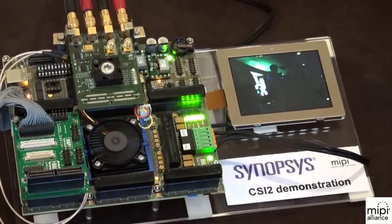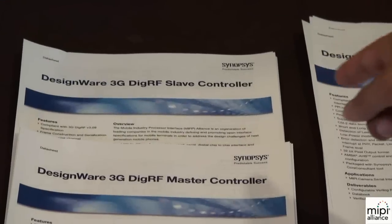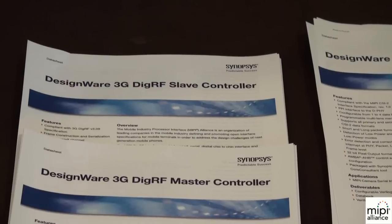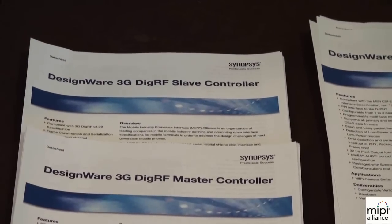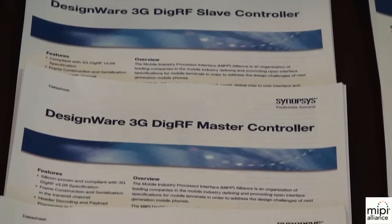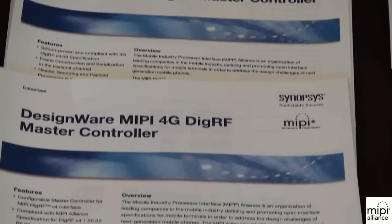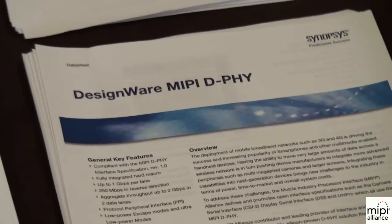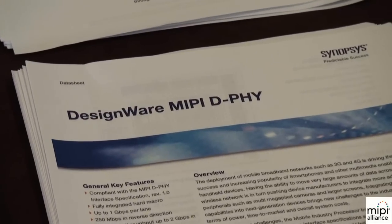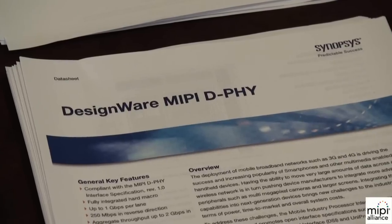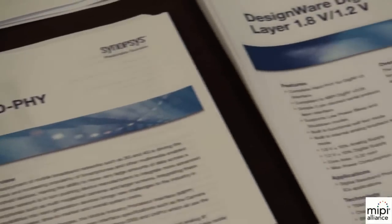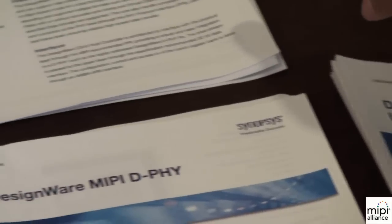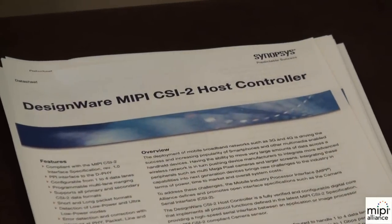What is your CSI-2 IP? This is mainly our MIPPE portfolio. We have a 3G DPHY slave controller, we have a 3G DPHY master controller, and also the 4G — the latest version of the 4G controller. These are soft macros, and they work with a DPHY file and with an M file also. We also have a solution for CSI-2: it's basically our CSI-2 host controller with a MIPPE DeFi.